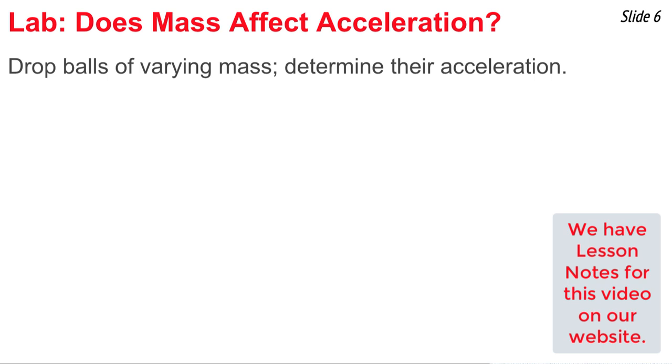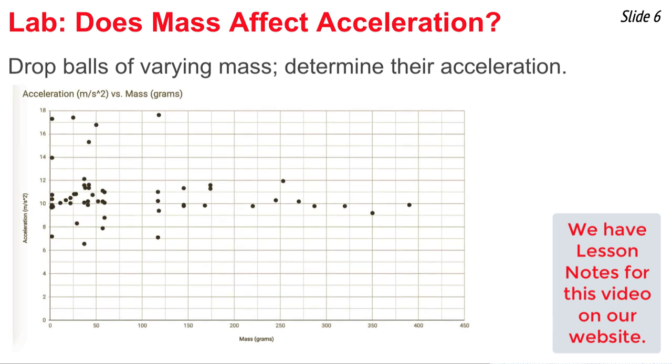So students take balls of varying masses, they drop the balls, and they determine the acceleration using a video camera and a video analysis software. Here's results from a recent year. Acceleration is plotted along the vertical axis, and mass is along the horizontal axis.